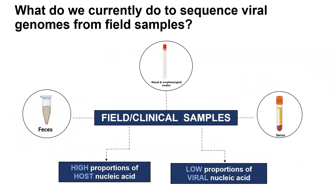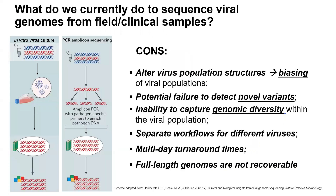However, when we think about sequencing field samples, we're probably going to encounter too many issues. The first one is the high proportions of the host nucleic acid, and the second, the low proportions of viral nucleic acid. Because of that, the current methods that we have for sequencing viral genomes benefit significantly from isolating viral nucleic acid from host nucleic acid prior to sequencing, or amplifying the viral genomes by PCR.